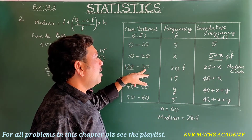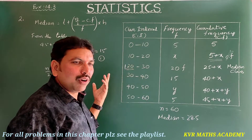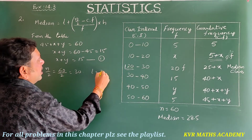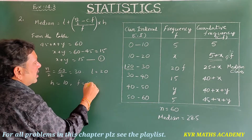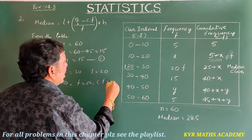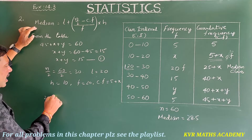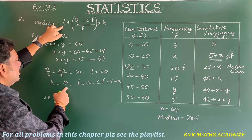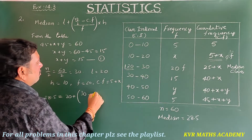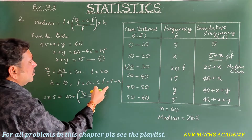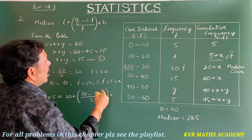The class width h = 10. Substituting into the formula: 28.5 = 20 + [(30 − (5+x)) / 20] × 10.